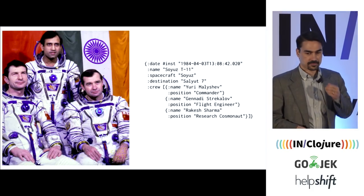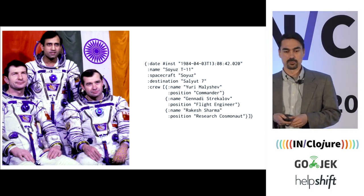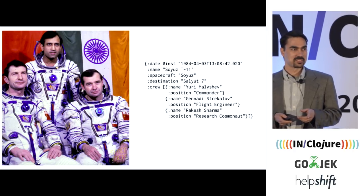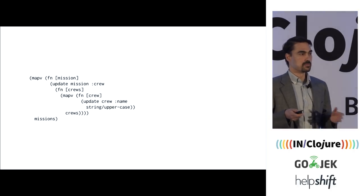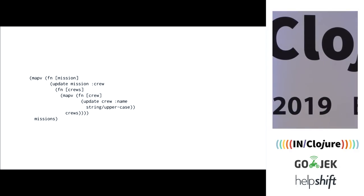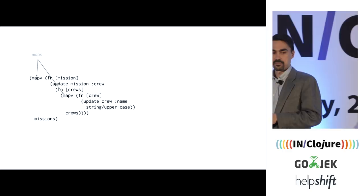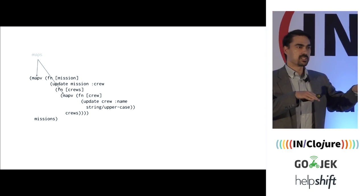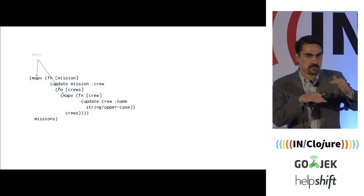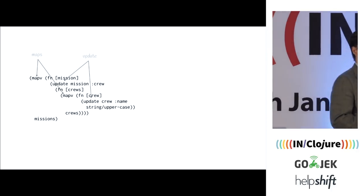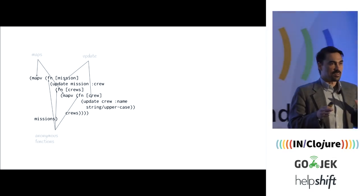Here's an example. This is a map that represents a space voyage — y'all recognize Rakesh Sharma. Here's some code that will manipulate this. We basically want to capitalize all of the names of the crew members of different missions. We're doing map-v, which means we're mapping over a vector — a vector of missions. Inside the crew key there's another vector of crew members. We're doing two updates and we have to define three anonymous functions. This is awkward code.